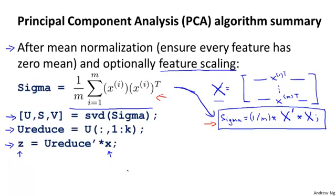That was the PCA algorithm. I didn't give a mathematical proof that this procedure actually gives the projection minimizing the squared projection error — that's beyond the scope of this course. But fortunately, the PCA algorithm can be implemented in not too many lines of Octave code, and if you implement this in Octave or MATLAB, you get a very effective dimensionality reduction algorithm.